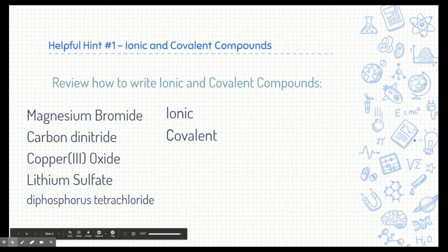Copper-3-oxide has a metal and a non-metal, so that's an ionic compound. Lithium sulfate is a metal and multiple non-metals, so that's an ionic compound. And then diphosphorus tetrachloride — that's phosphorus and chlorine, only non-metals — which makes it a covalent compound. Knowing the type of compound lets us know how to write these equations.